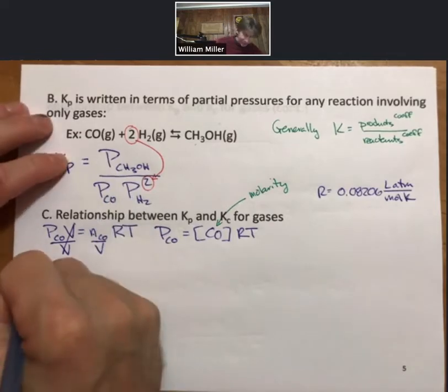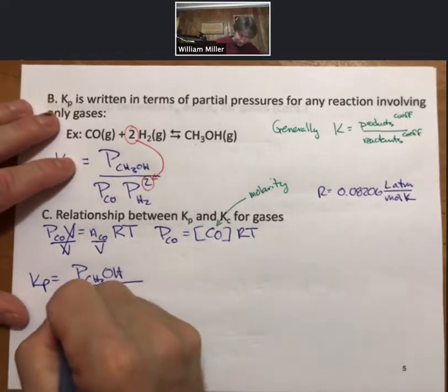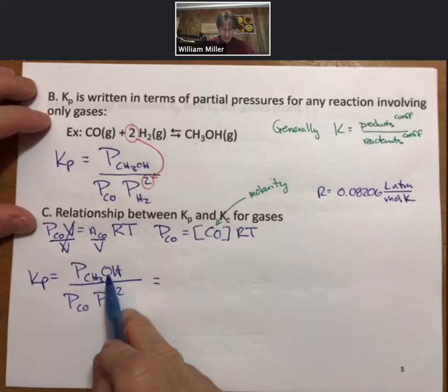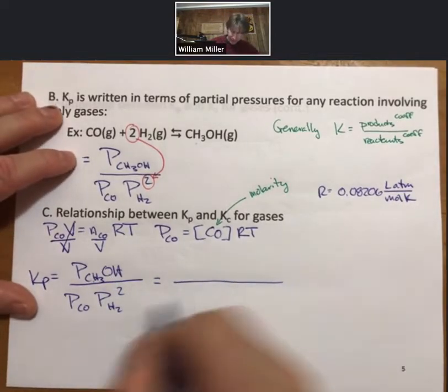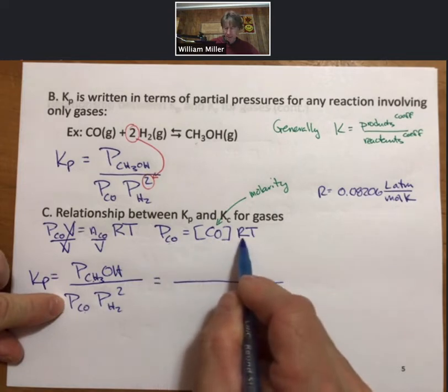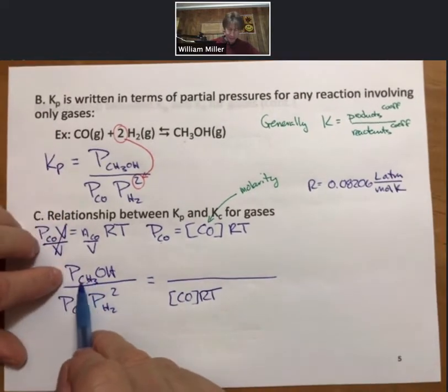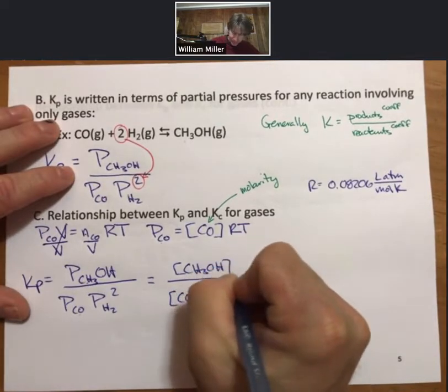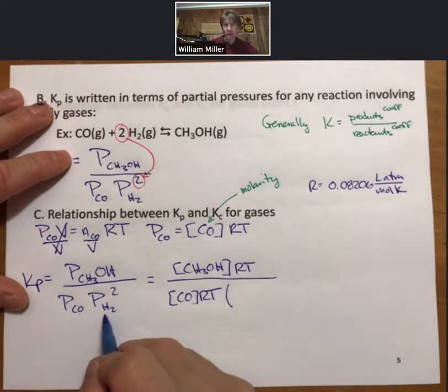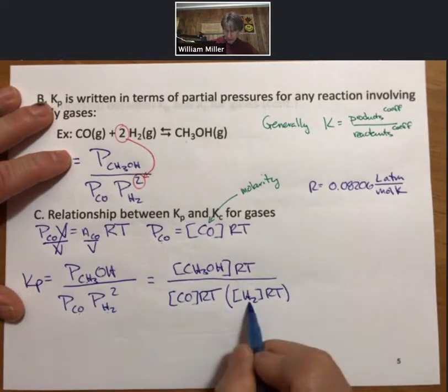So what that means is for any of these we can do the same thing. So what I'm going to do is I'm going to write my Kp down here in terms of partial pressures, and then whenever I see a partial pressure I can replace it with an equivalent expression. And I'll start with my carbon monoxide so partial pressure of carbon monoxide equals concentration of that same thing times RT. Partial pressure of methanol equals concentration of methanol times RT. And since this one is going to be squared I'll put a bracket, I'm replacing and then I'm squaring.